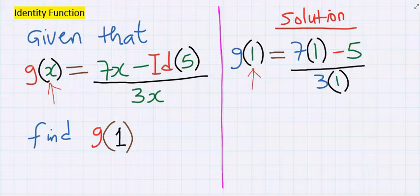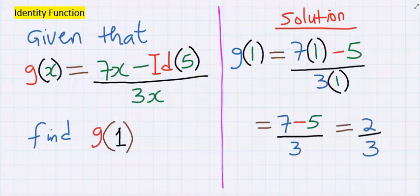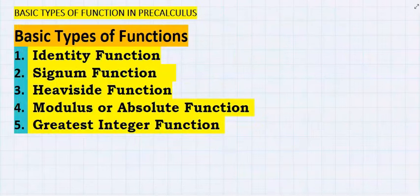However, the id of 5 is equal to 5. 7 minus 5 divided by 3 will give us 2/3, which is the answer. Now you know what identity function is.